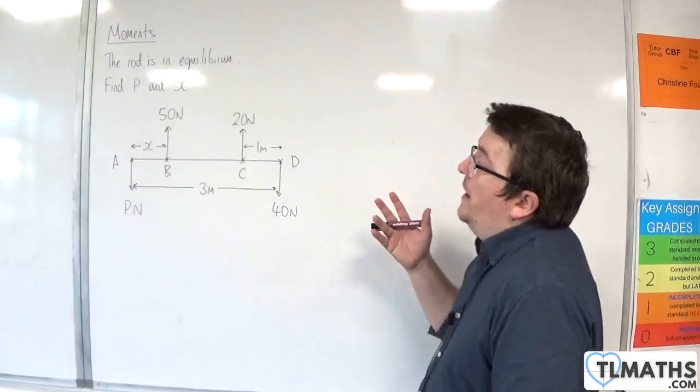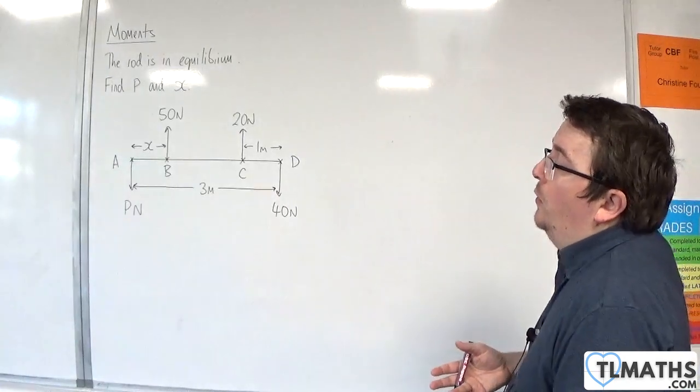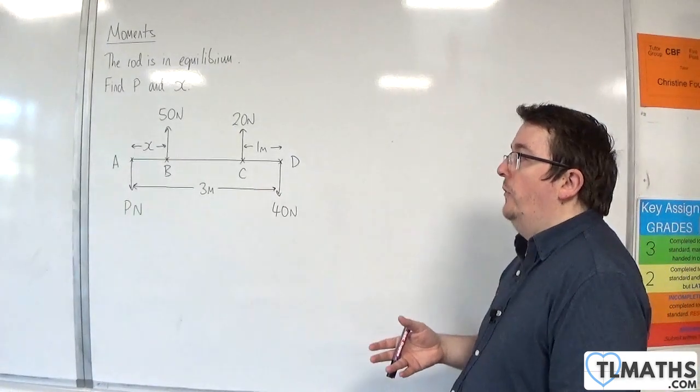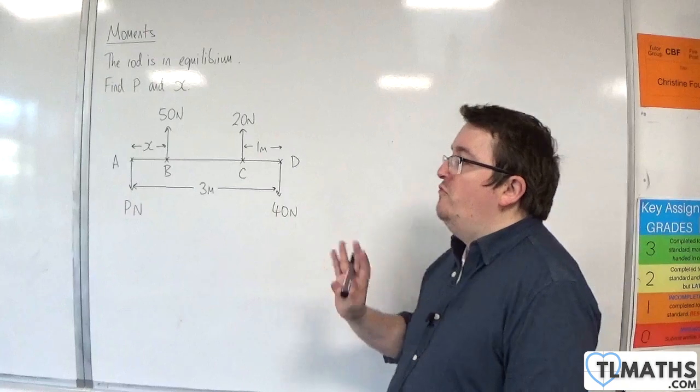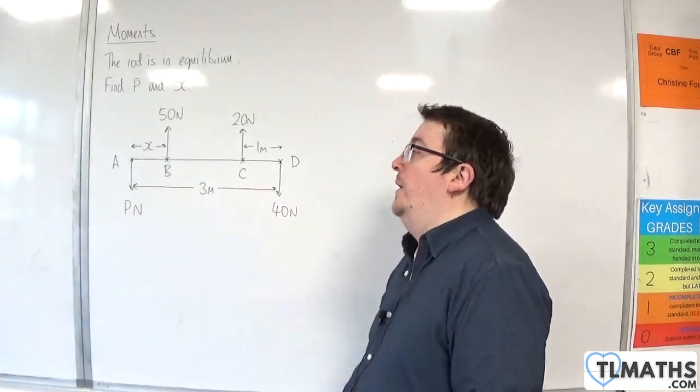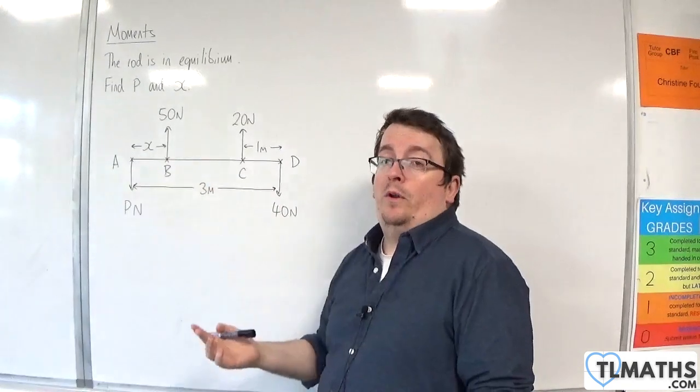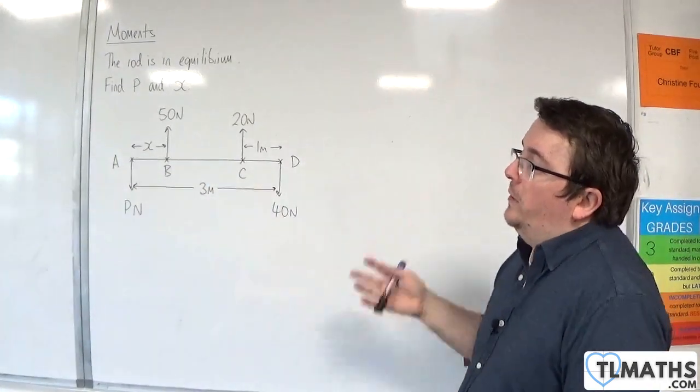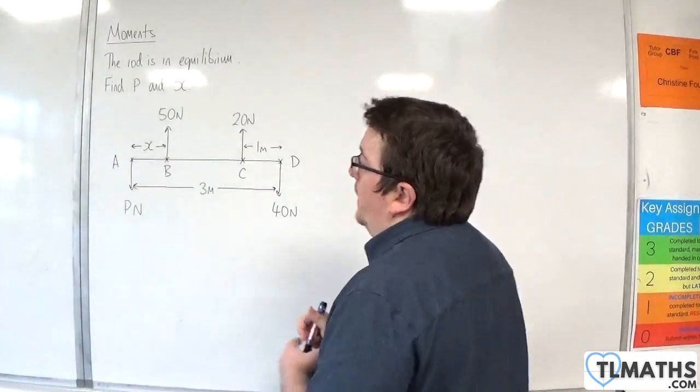In this example we have a horizontal rod in equilibrium. We need to find P and X. It doesn't actually matter which way round we do this because if we resolve vertically we can work out P, and then we can take moments about point A and work out X. It doesn't really matter which order you do that in.